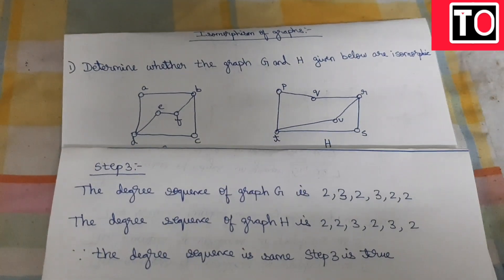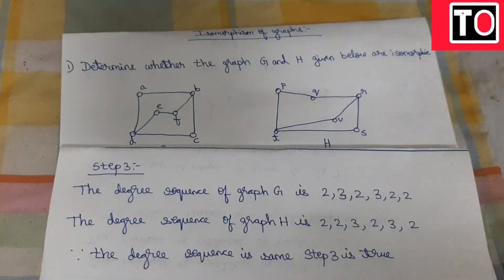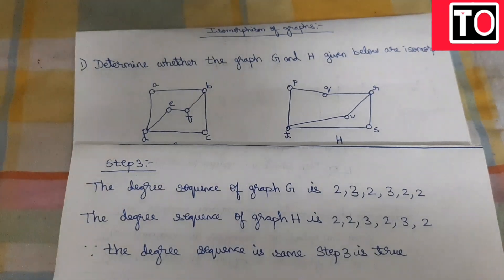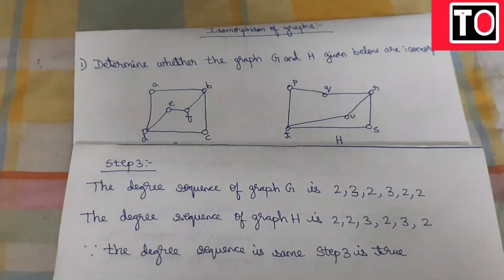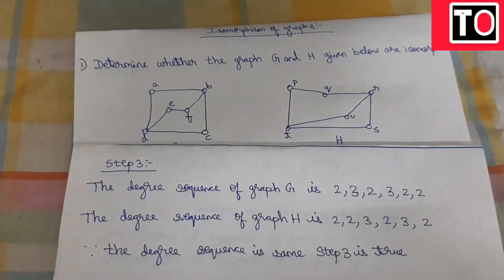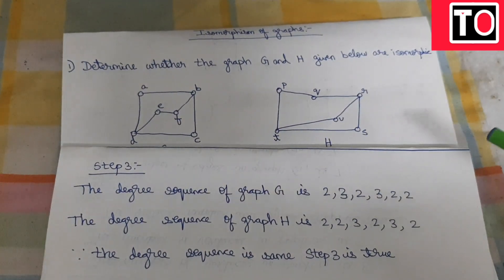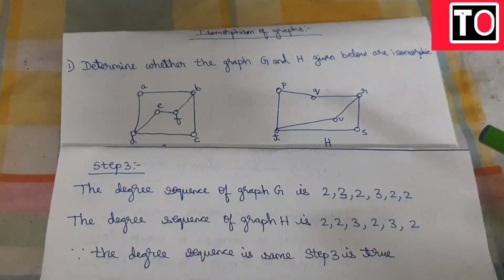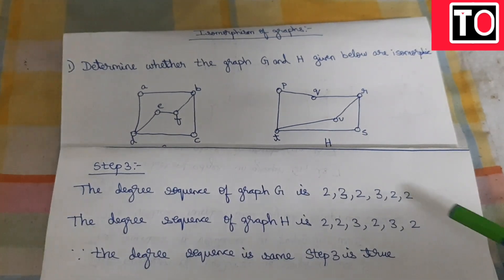Now, if any of steps 1, 2, or 3 is false, you cannot prove the graphs are isomorphic. If the vertex count, edge count, or degree sequence does not match, then the graphs are not isomorphic.